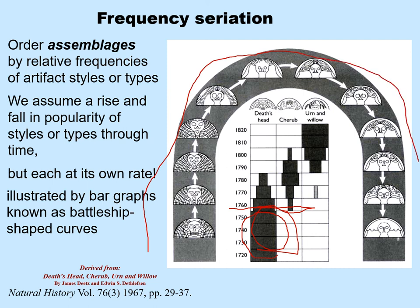The illustration shows three different types of decorations: death's heads, cherubs, and urn and willow. In the center it shows the frequency seriation, and very cleverly, around the edge it shows that during the long time span of the 1720s through the 1780s, the death's head decoration was found but was stylistically changing — so around the edge it shows the stylistic seriation of one of the decorations. Very well done.